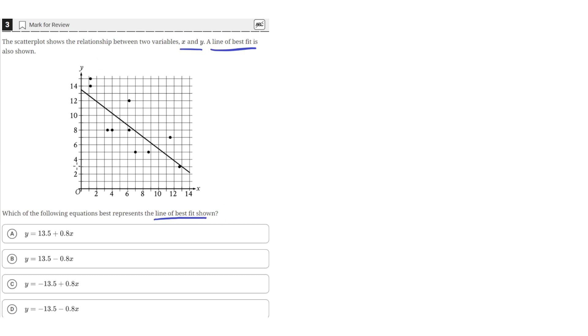So we have this graph with a bunch of data points, and we have this line of best fit that goes down the graph. And we need to see which of these equations best represents the line of best fit.